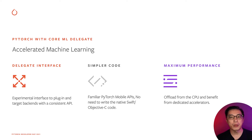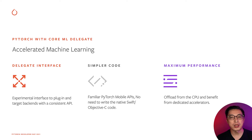We provide an experimental interface to let you target PyTorch models to Core ML with a consistent Python API. You get the same familiar PyTorch APIs with no need to write Objective-C or Swift code. You can offload directly from CPU to dedicated hardware to get maximum performance out of your device.